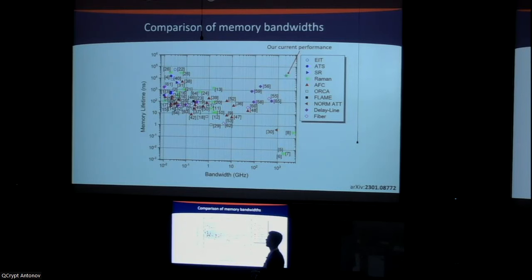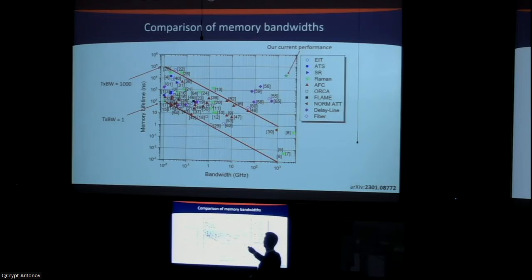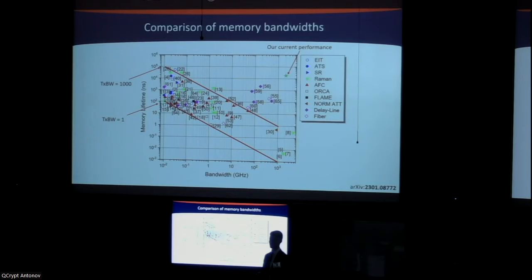This arxiv paper plot shows memory lifetime as a function of bandwidth for many different memory technologies. All the matter-based memories have really low bandwidth — on the order of megahertz to single or tens of gigahertz — while we have similar memory lifetimes to all of them. The line representing a time-bandwidth product of one shows that all matter-based memories fall between TBP of 1 and 1000, whereas we're at roughly 10^8 — orders of magnitude better than any other competing technology out there.